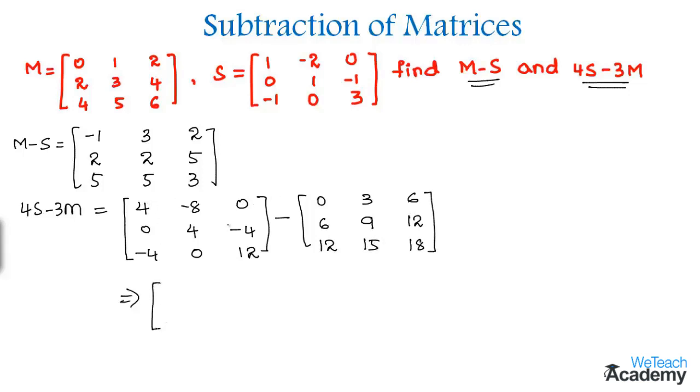And now we need to perform subtraction. So by subtracting we get 4 minus 0 which is 4 again and then minus 8 minus 3 would become minus 11 and then 0 minus 6 which in turn becomes minus 6. And similarly the next rows would be minus 6, minus 5, minus 16. And then here by subtracting we get minus 4 minus 12 which is minus 16. And then 0 minus 15 would be minus 15 and at last 12 minus 18 is minus 6.